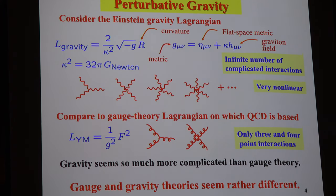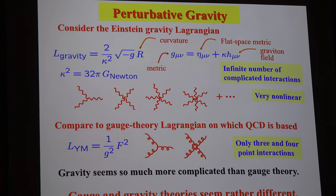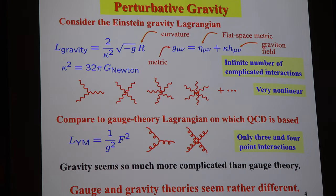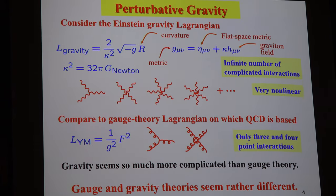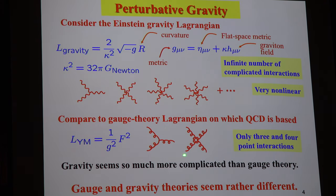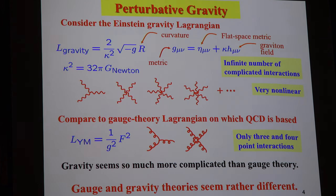If you compare that to QCD — while QCD is a complicated theory, as we heard in Lance's talk, and it takes some non-trivial ideas to tame it — it's definitely a much simpler theory compared to gravity. These vertices are very simple relatively speaking: there's just a three-point interaction and a four-point interaction. And it looks like these theories are quite different — they don't have much to do with each other, other than some superficial gauge invariance.